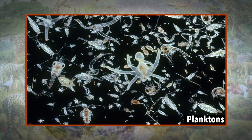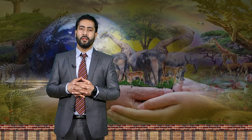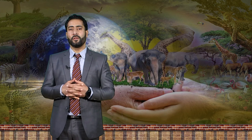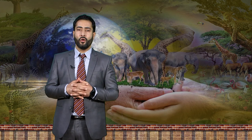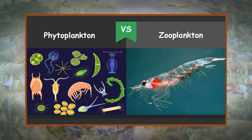Planktons are microscopic organisms that live in aquatic habitats. Some of them are photosynthetic and others are heterotrophs. Thus, they may be distributed to different trophic levels in the food chain or ecological pyramid. Those that are capable of photosynthesis, such as phytoplankton, are considered as producers. Heterotrophic planktons such as zooplankton may be consumers, as they feed on other planktons.